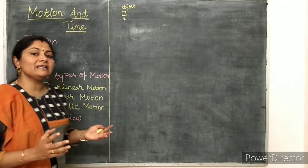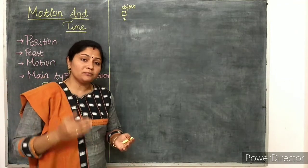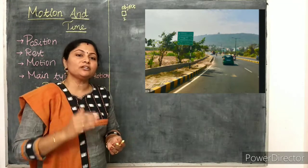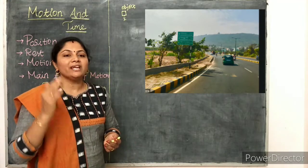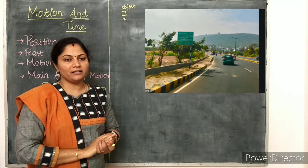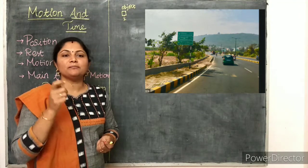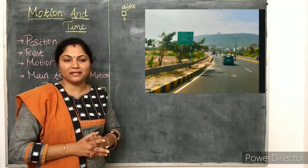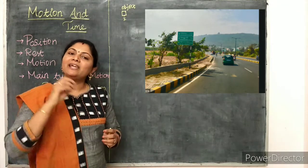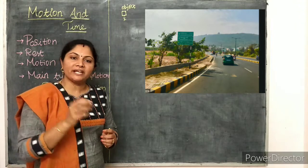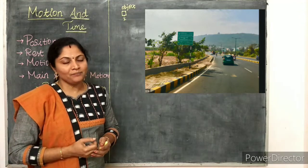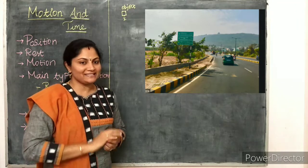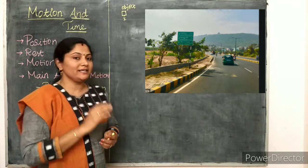What is meant by rectilinear motion? If an object is moving in a straight line, then that object is said to be in rectilinear motion. Rectilinear motion means the motion in a straight line. For example, a car moving in a straight line is an example of rectilinear motion.